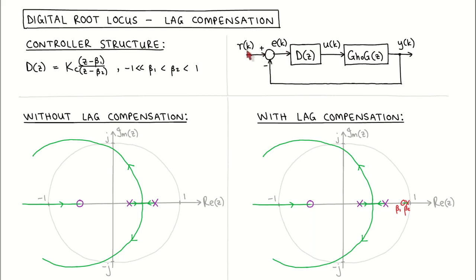We can understand the idea of lag compensation by looking at this conceptual example. This plant has two real poles and one real zero as shown in purple. The root locus for a proportional controller is shown in green. This system is of type zero and will have a finite steady state error in response to a step input. If we wish to decrease the steady state error we could place a controller pole and zero close to z equal to one, with the pole to the right of the zero as shown here in red. This will have the effect of reducing the steady state error.